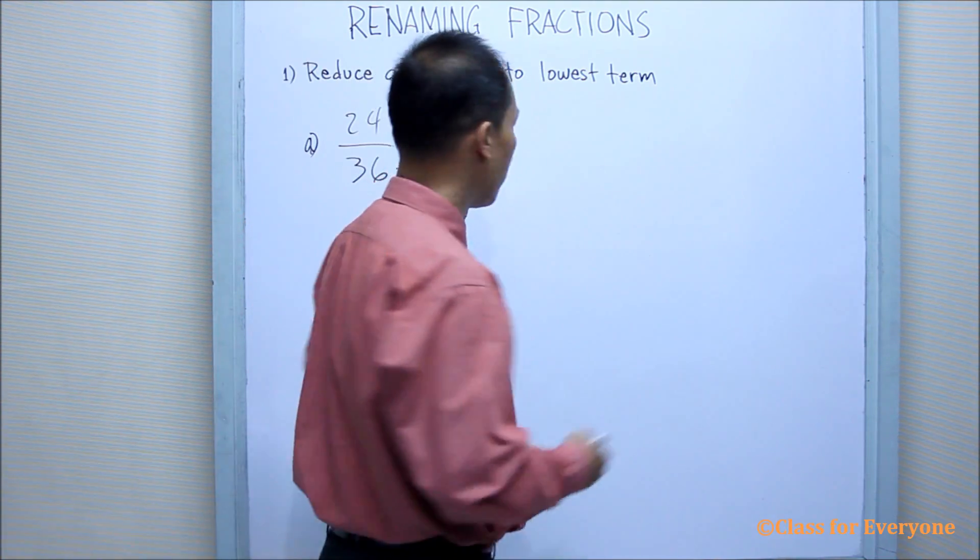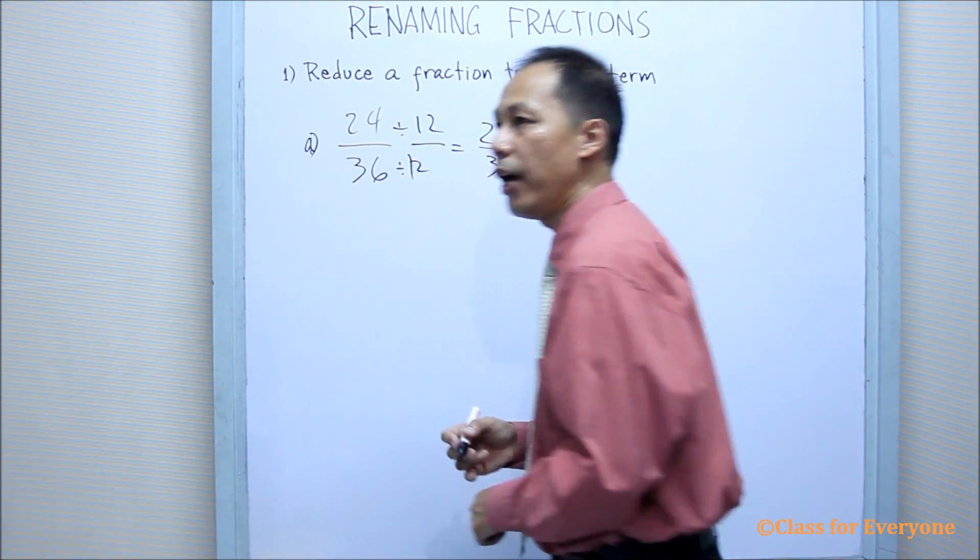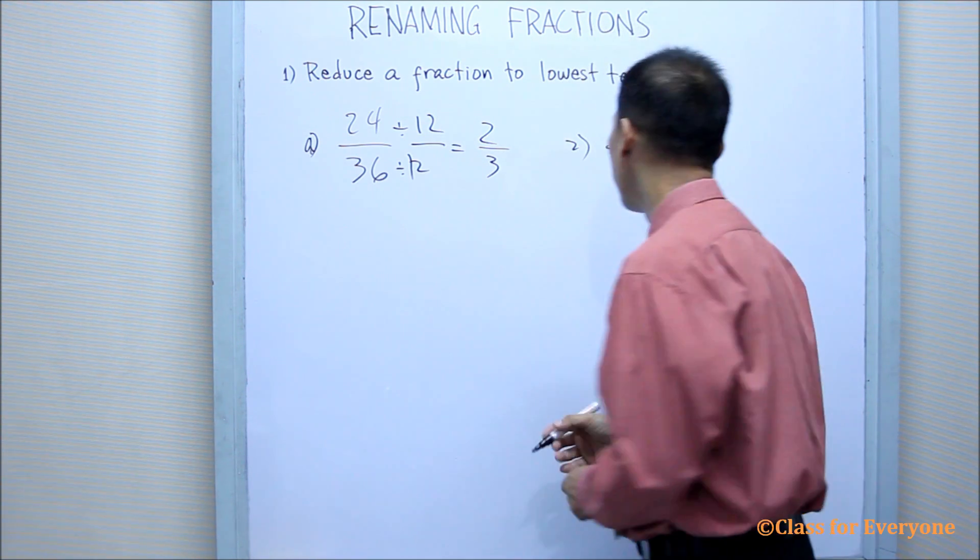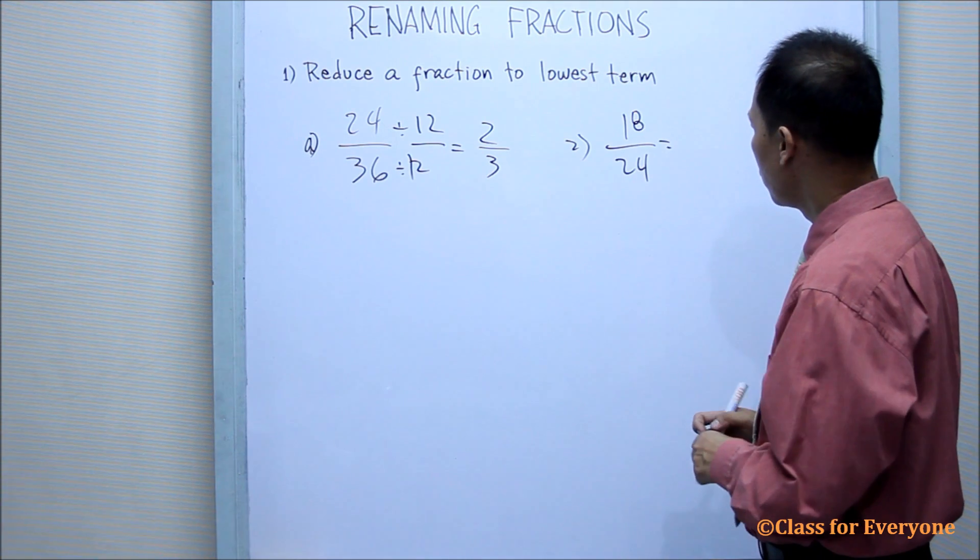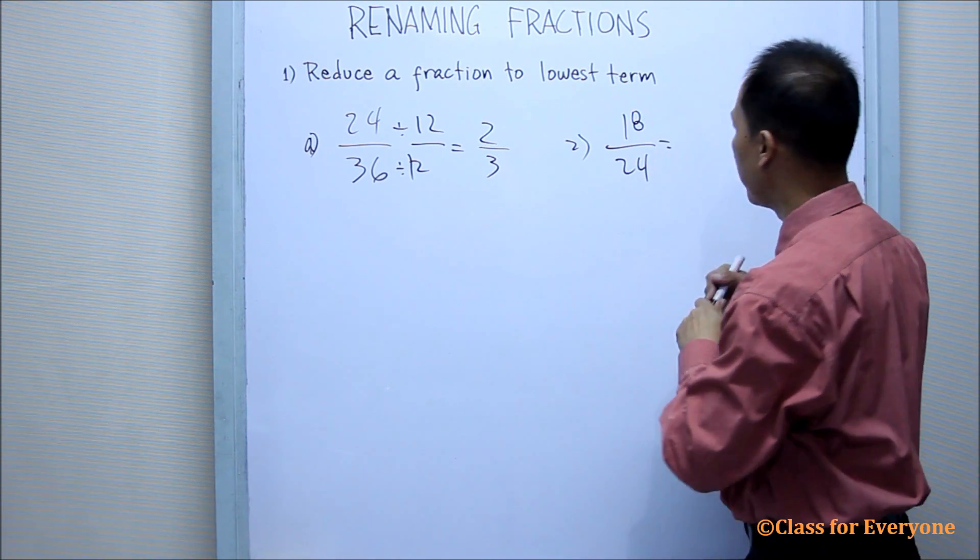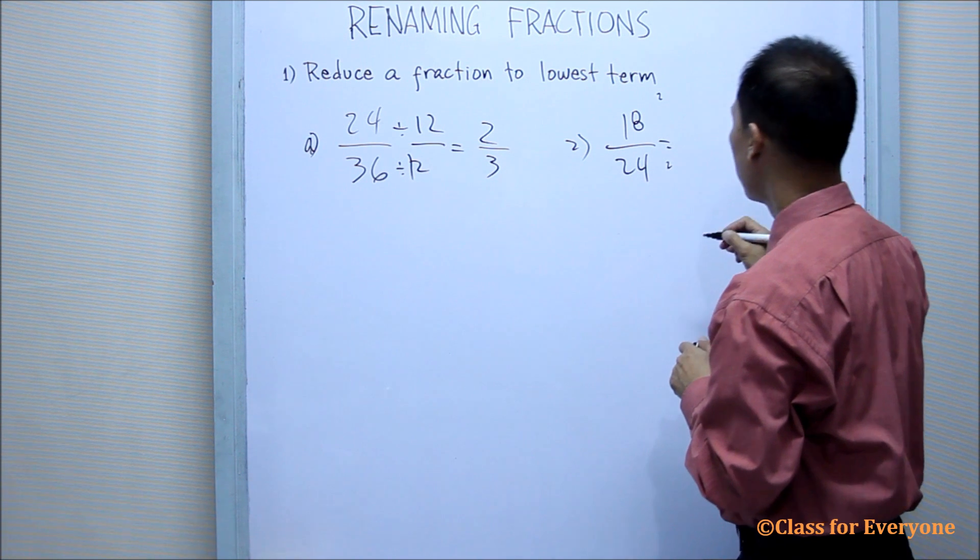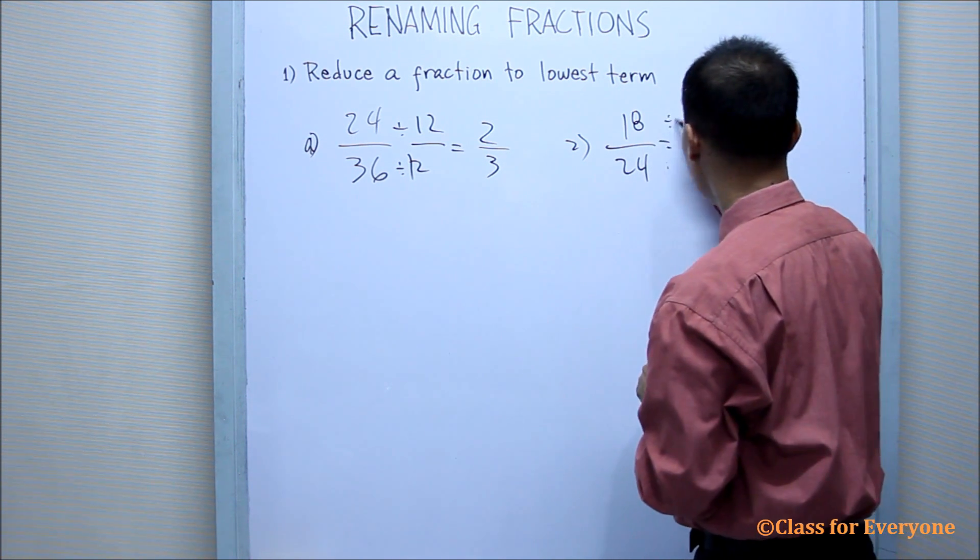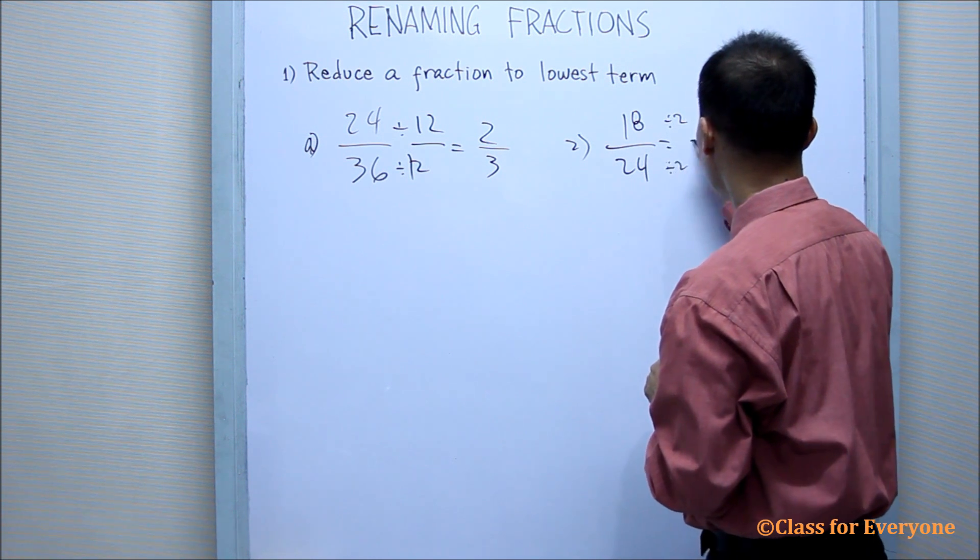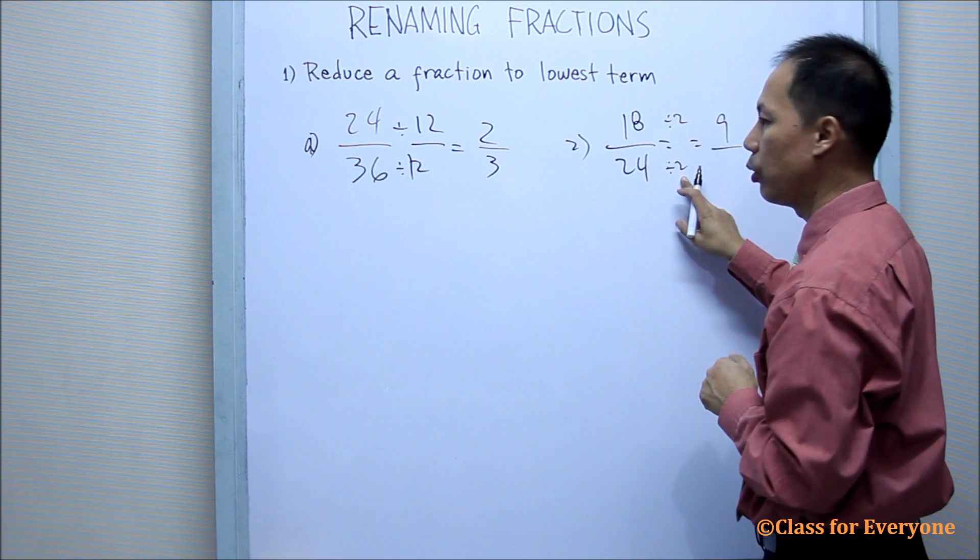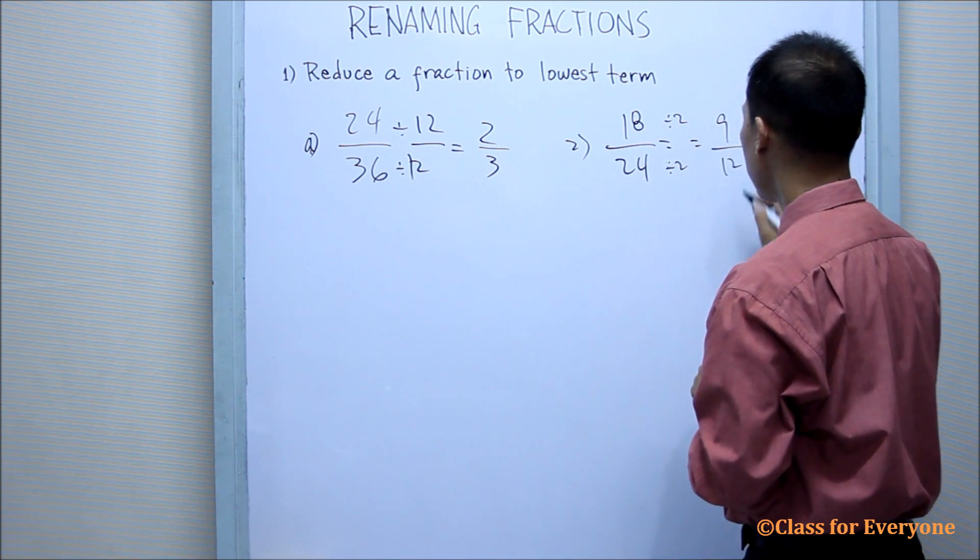Another example is when we have 18 over 24. 18 and 24 are both divisible by 2. But then, if we divide this by 2, 18 divided by 2 is 9 and 24 divided by 2 is 12. But still...